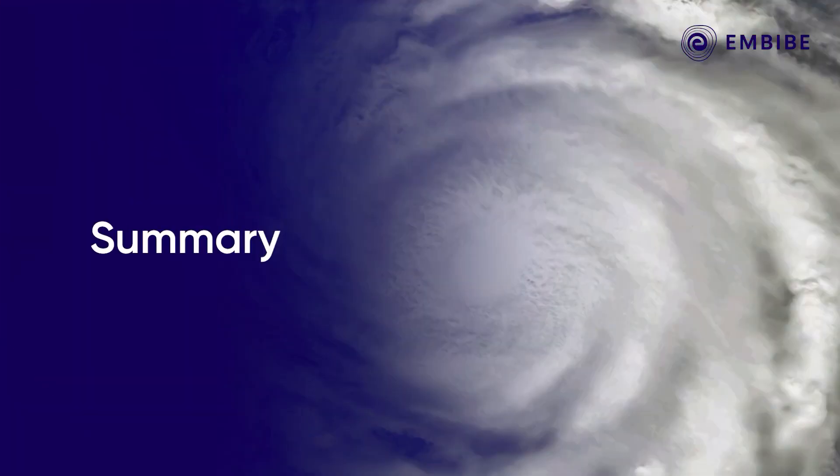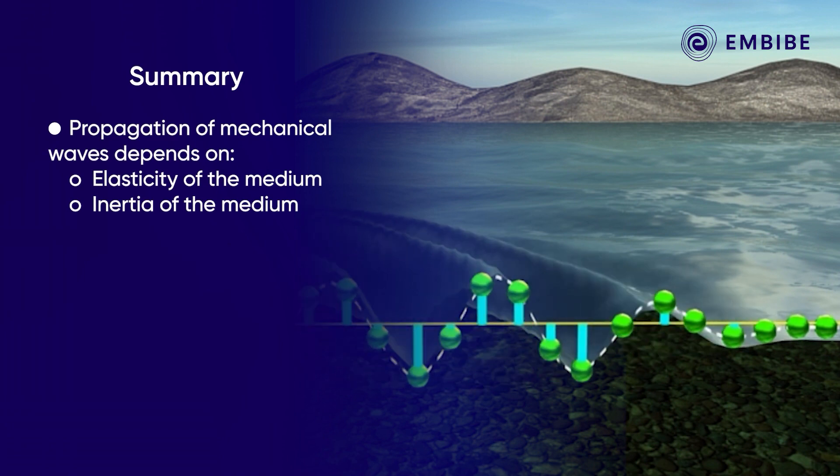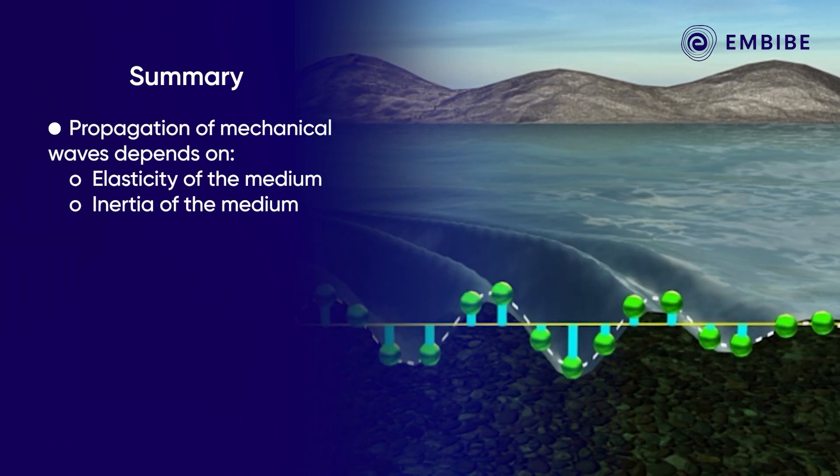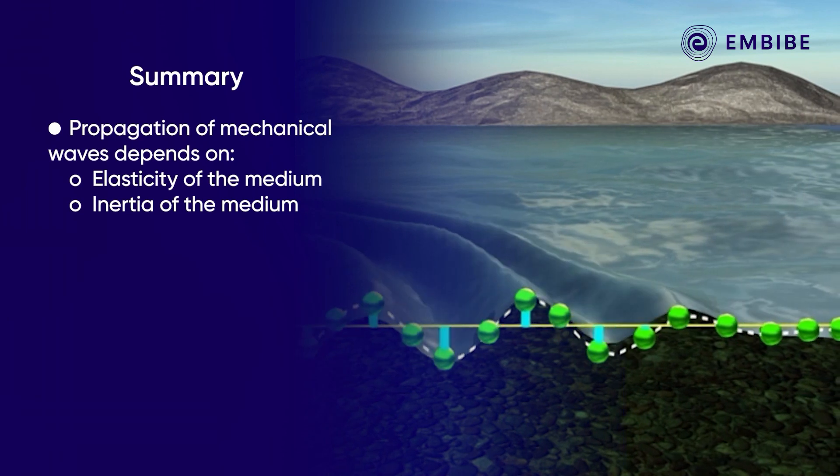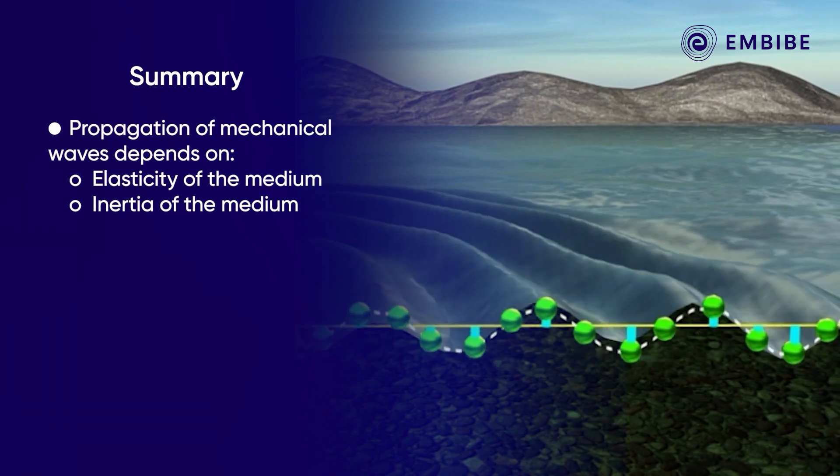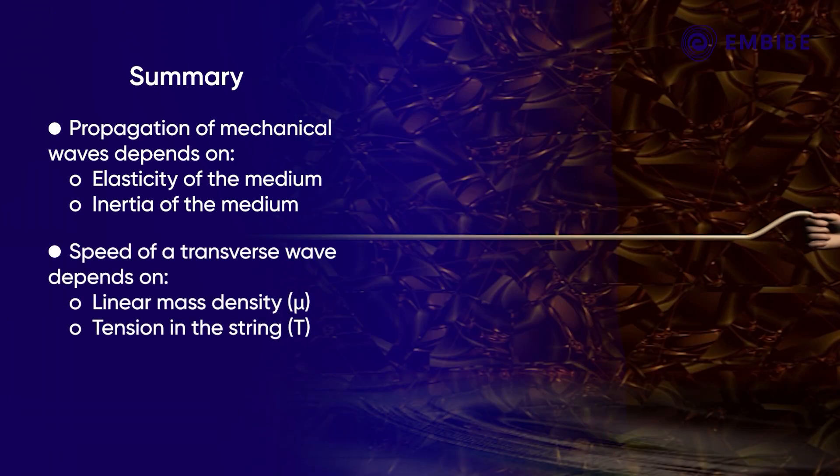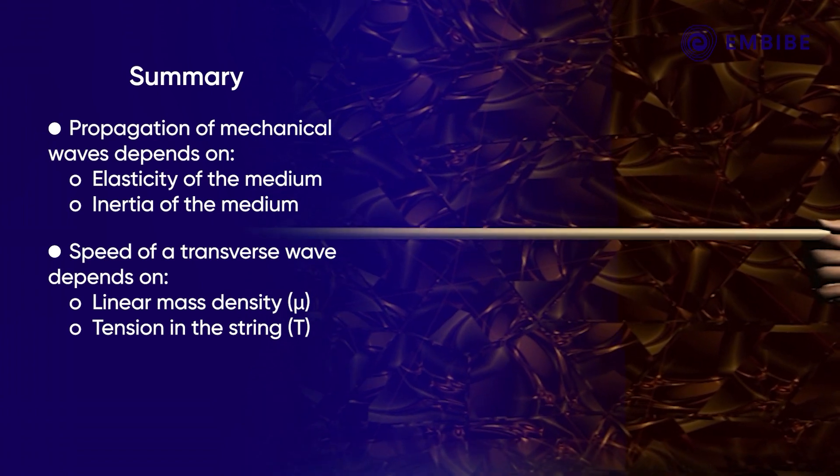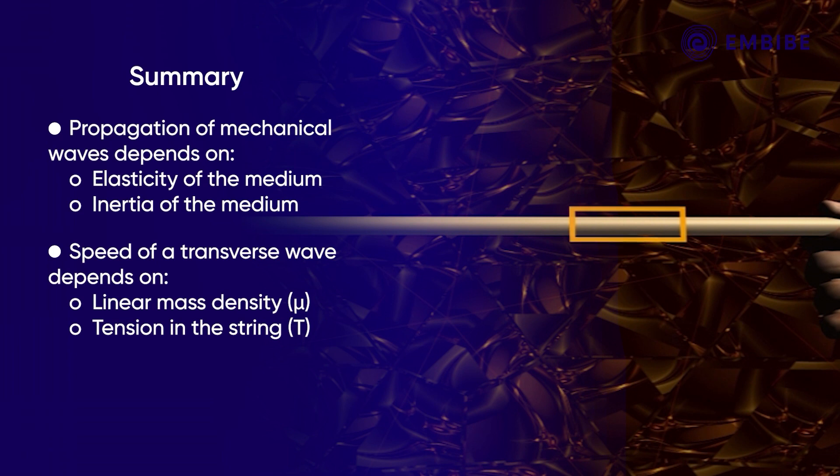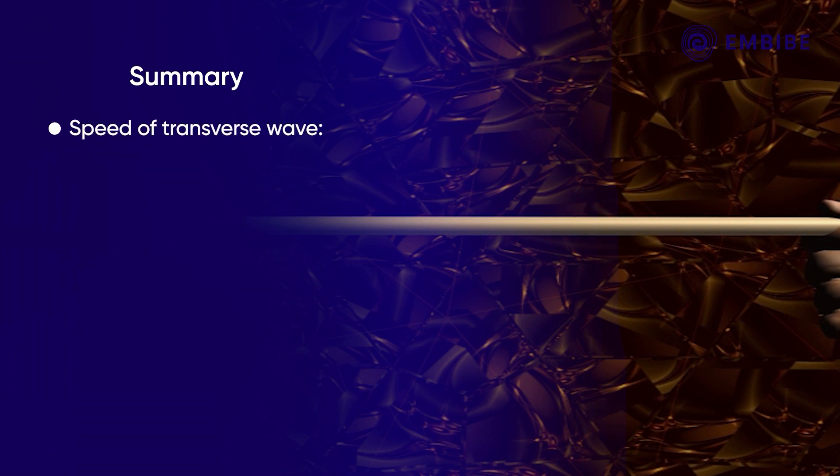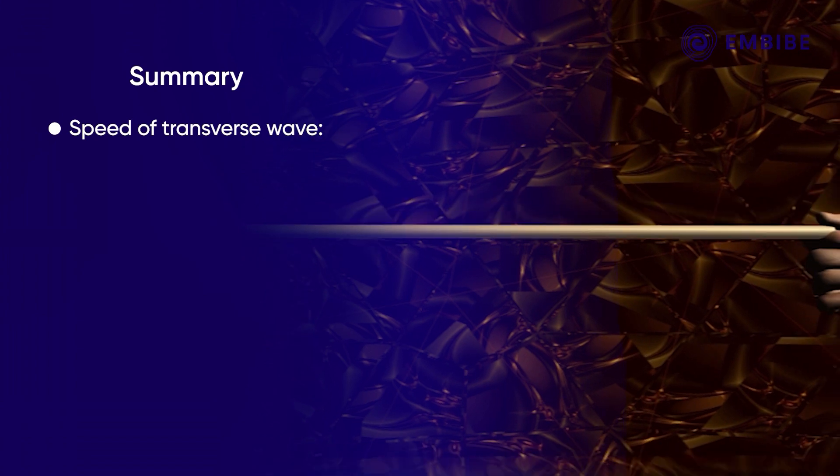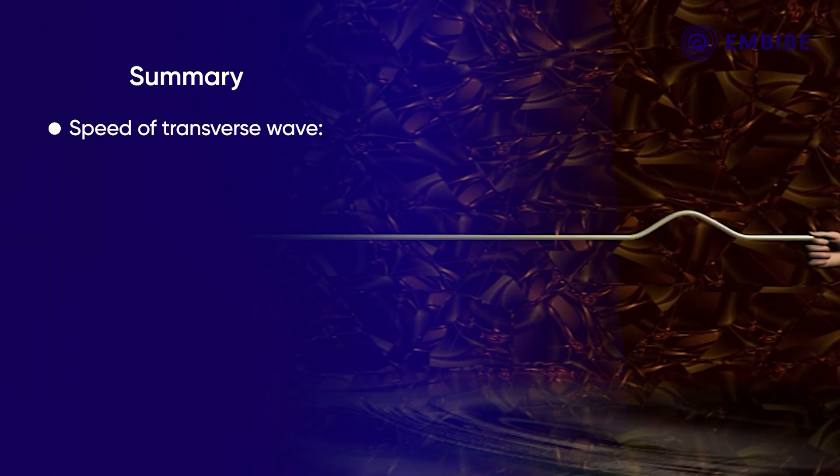In this video we learnt that for propagation of mechanical wave, elasticity and inertia of the medium are necessary. As it was found that the speed of the transverse wave depends on the linear mass density and tension in the string, we could arrive at the expression for the speed of the transverse wave using dimensional analysis. The expression for the speed is given by the square root of T over μ.